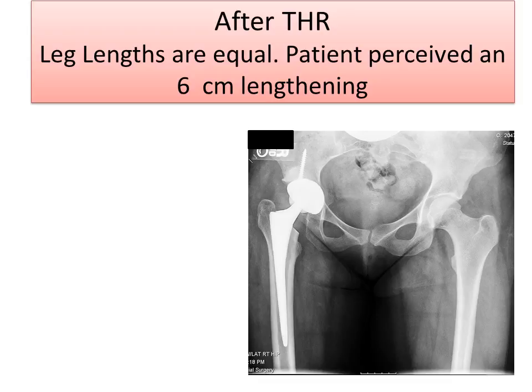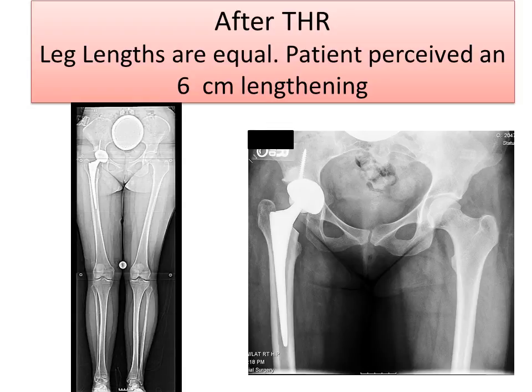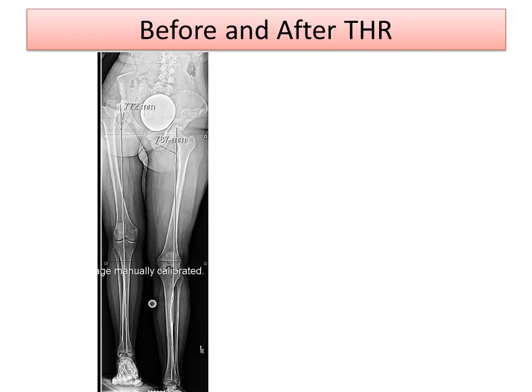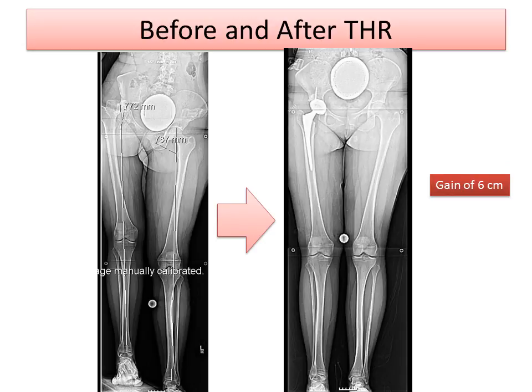After total hip replacement, her leg lengths were equal, and the patient perceived a 6 centimeter lengthening. You'll notice on the long x-ray the pelvis is level and a full 6 centimeters of lengthening has been achieved. Now understand that the sciatic nerve has not been stretched 6 centimeters, because it's not a true lengthening and stretching of the nerve — rather an unlocking of the pelvis that allows for the apparent lengthening of the leg. No additional lengthening surgery was necessary other than the hip replacement.